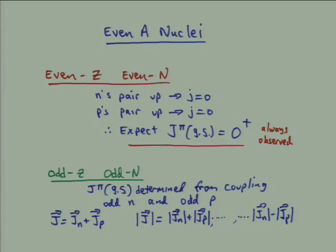That's odd-A nuclei. For even-A nuclei, in some ways it's simpler, in some ways more complicated. We've got two different kinds: even-evens and odd-odds. For odd-odd nuclei, there's not a whole lot you can do except say: I've got one odd proton and one odd neutron, use the shell model to figure out the spins of each, and then add them together vectorially. The spin of the nucleus as a whole is the vector sum of the neutron spin and the proton spin.